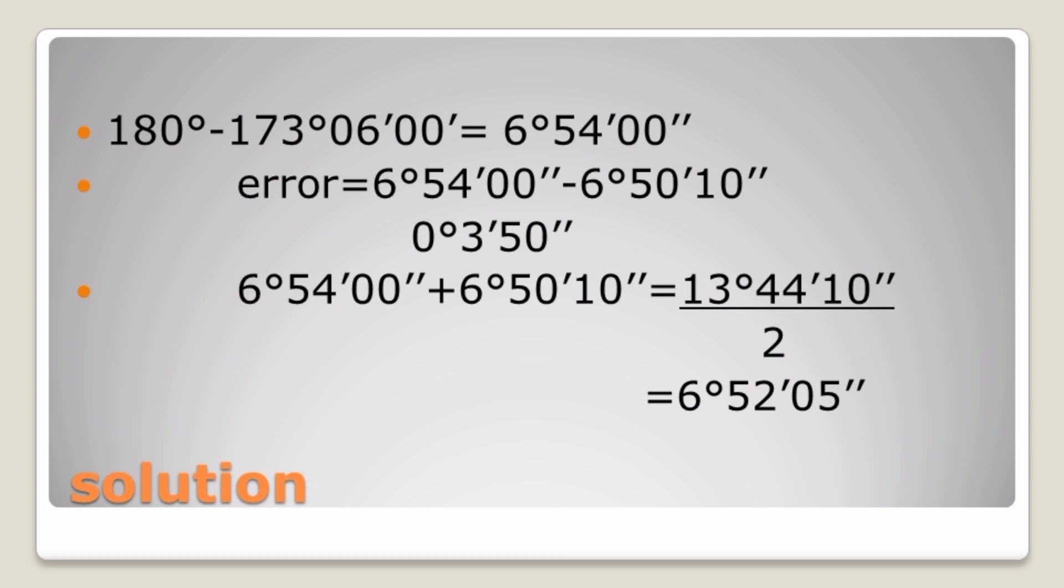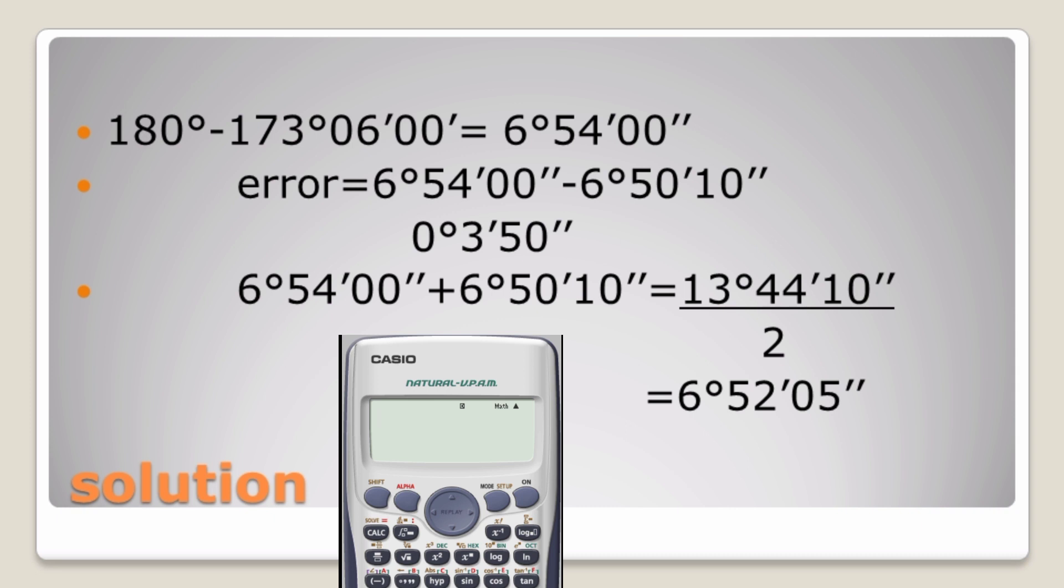Then we are told to correct the horizontal circle reading. We have a variety of ways you can use the error to correct, but also you can do what I've done.